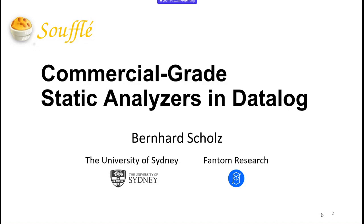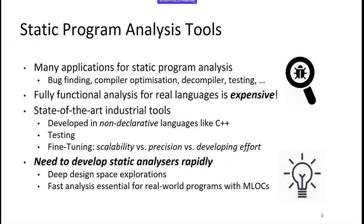When you write static analysis tools for large systems code, it's really challenging because you have languages like C and C++ you want to analyze, and the semantics of these languages is very complex. Also, writing these bug-finding tools for very specific analysis like buffer overflows is challenging in finding the right balance between precision and getting results in time. We discovered very quickly that implementing these tools is very hard — you need a very large engineering team. So about eight years ago, we wanted to find out if there were alternative ways to write static analysis tools.